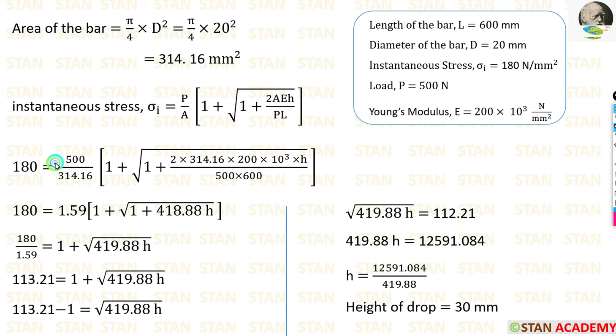500 divided by 314.16, we will get 1.59. When we do calculation for these values, we will get 418.88 H. Then we can take this 1.59 on the left side, it will go in the denominator. Then we can take this 1 on the left side, it will become negative.